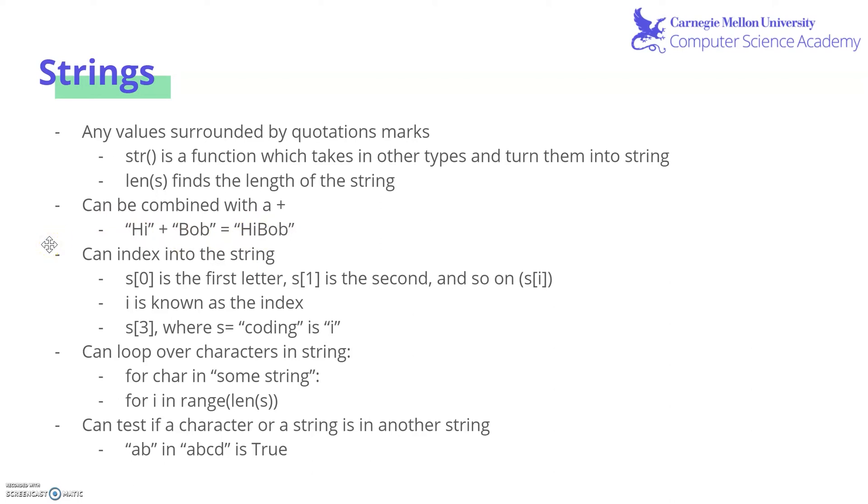You can also index into strings using brackets and the number for the position. So a string with bracket zero is the first letter or character. s with bracket one is the second, and so on and so forth with s[i] being the general format, with i being known as the index. So for example, if we had a string with the word coding in it, s[3] is zero, one, two, three. Here's the third character and it is i.